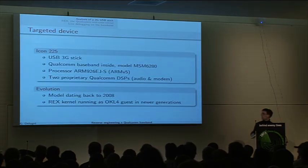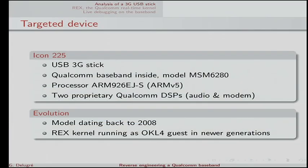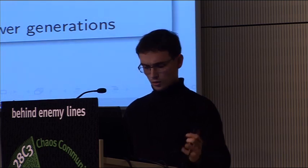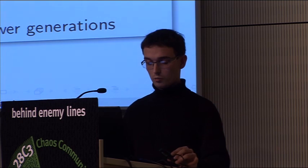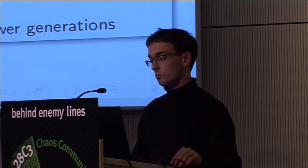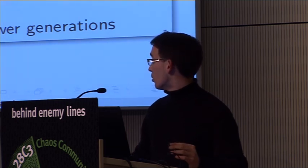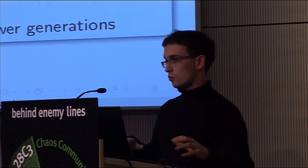I'm not sure this stick works on American frequencies, but there are close models. The name is an Option Icon 225 — a 3G USB stick with a Qualcomm MSM 6280 inside. You can find inside an ARM V5 processor and two proprietary DSPs for processing the audio signal and modem data. It's not the newest USB stick, dating back to around 2008, and the kernel running inside it has evolved quite a bit since then.